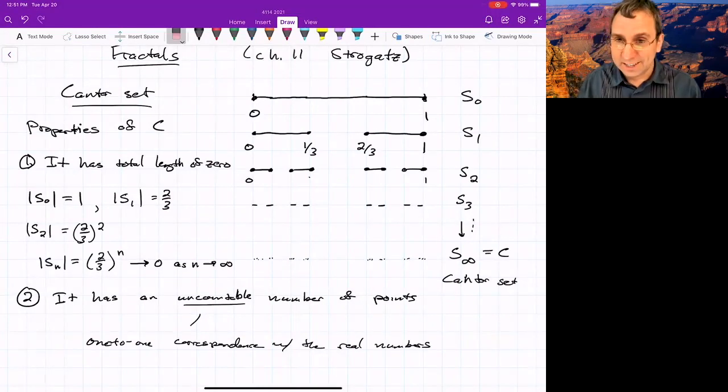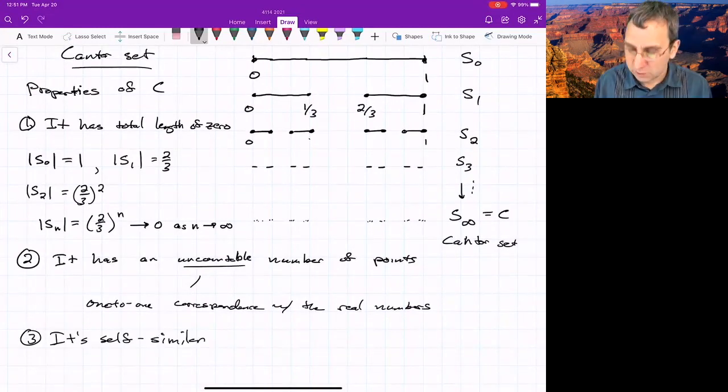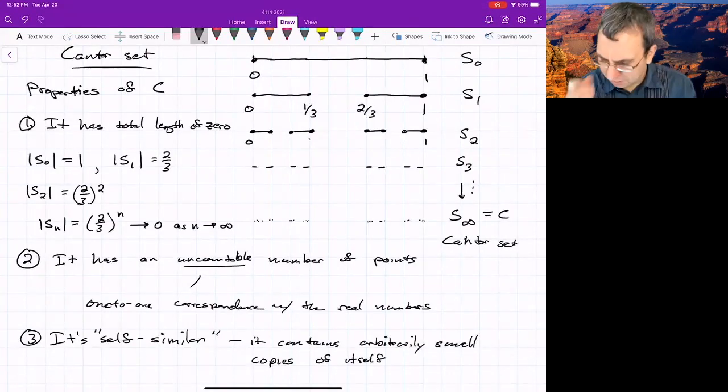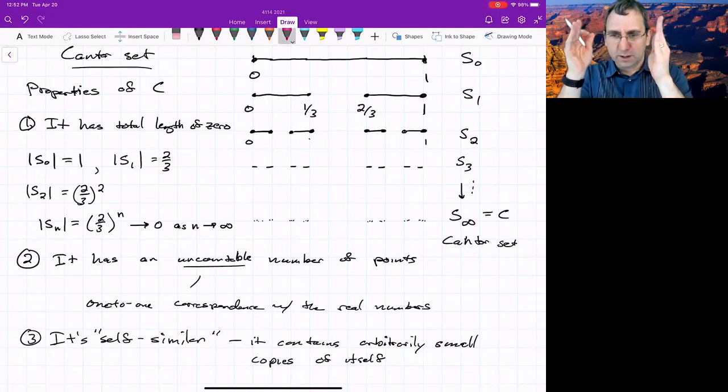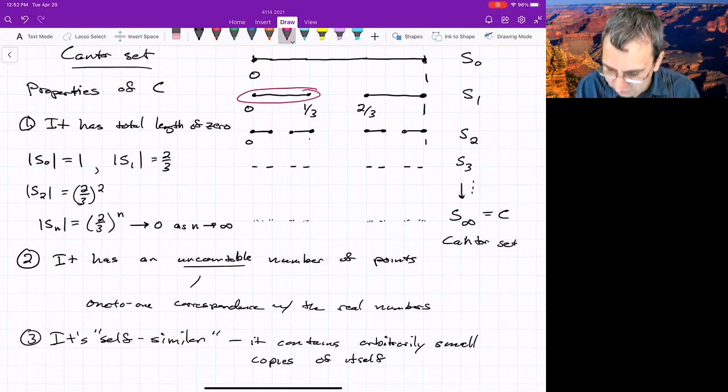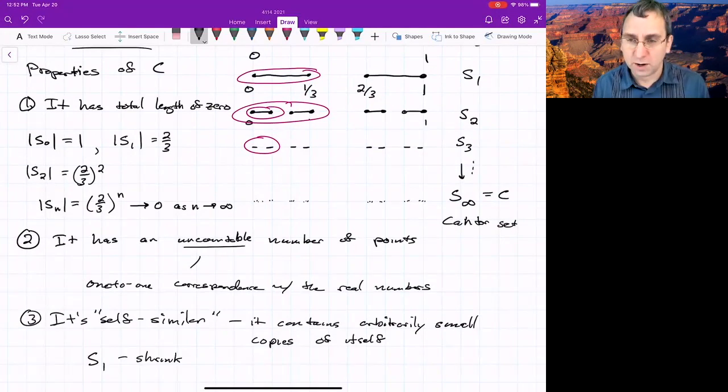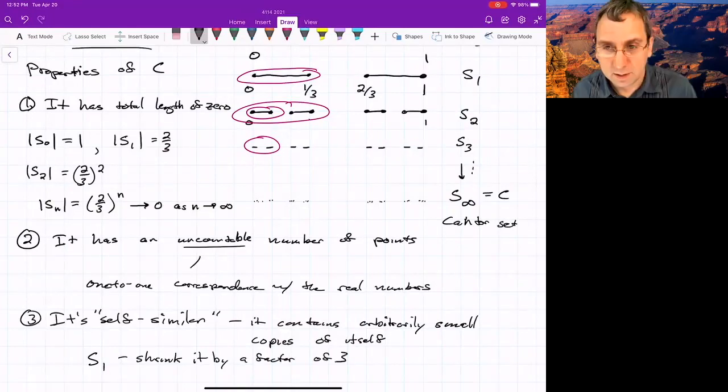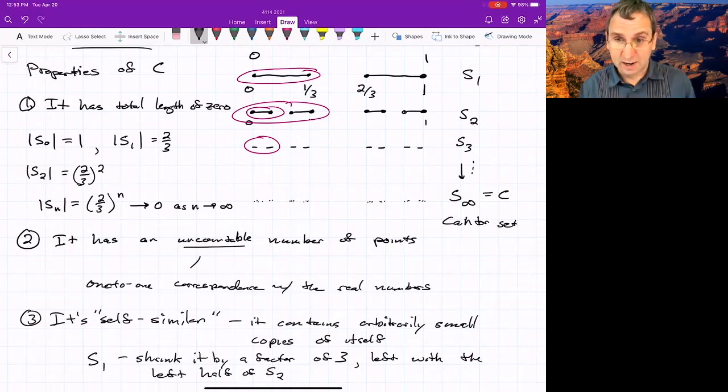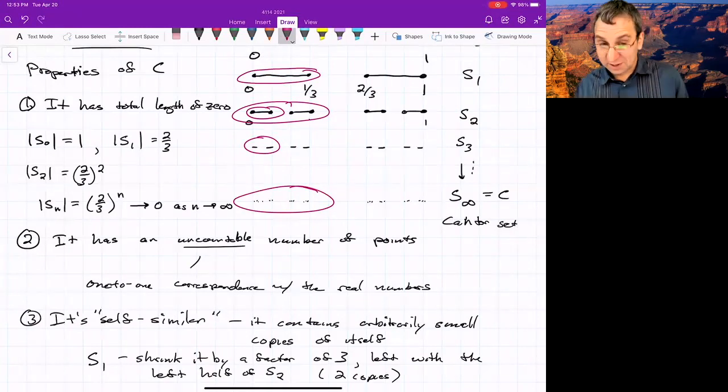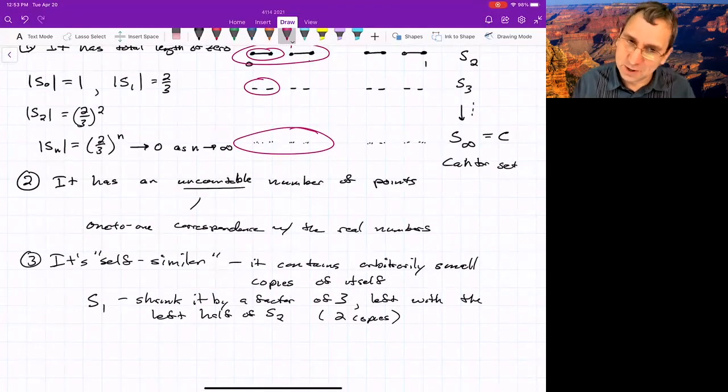It's self-similar. I mean, you can see it. It contains arbitrarily small copies of itself. So by self-similar, I mean it contains arbitrarily small copies of itself. And maybe you can just see it. Started with the unit interval and then removed the middle third. But now at this stage, it's almost like we've got an interval and then we remove one-third. And the same thing all the way down. We've got an interval, we remove one-third. So you could think of it as you take S1, shrink it by a factor of three, and you're left with the left half of S2. And also the right half. So it's almost like there's two copies. And this continues all the way to S infinity. The left half of S infinity is just a shrunken version of S infinity. So that means S infinity contains within it two copies of S infinity.